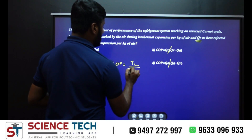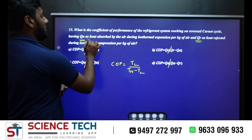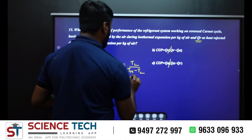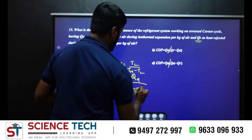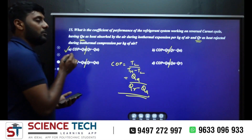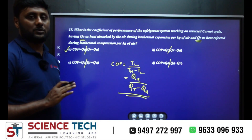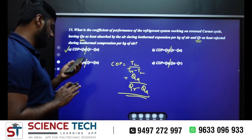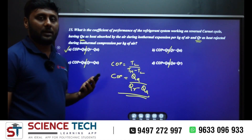We use TL divided by TH minus TL. The lowest temperature corresponds to QA (heat absorbed), giving COP = QA divided by QR minus QA, where QR is the heat rejected. So QA is the heat absorbed and QR is the heat rejected. Option A is the correct answer.